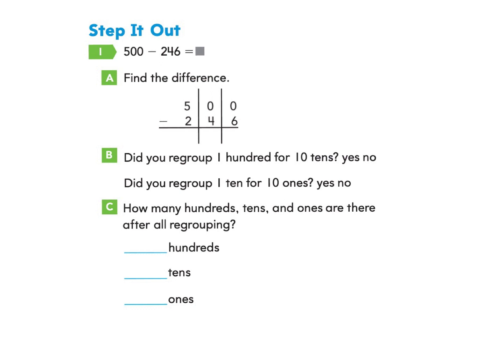Let's take a look at the next page, page 413. Under Step It Out, we see the problem 500 take away 246 equals an unknown number. Part A asks us to find the difference. We'll start with the ones column — we have nothing and need to take away 6. We can't do that, so we're going to go next door to the tens column. But there are 0 tens, so we'll need to go next door to the hundreds.